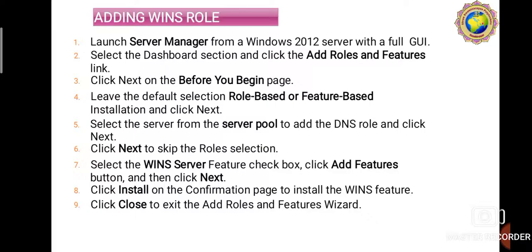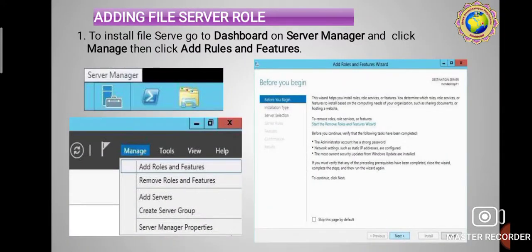To revise: first, launch Server Manager from Windows 2012 Server with full GUI. Then select the Dashboard section and click 'Add Roles and Features'. Click Next on the Before You Begin page, leave the default Role-based or Feature-based Installation, click Next, select the server from the server pool, click Next to skip role selection, select WINS Server Features checkbox, click Add Features, click Next, click Install on the Confirmation page, and click Close to exit the wizard.